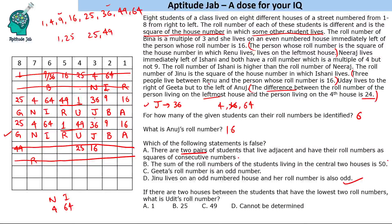If there are two houses between the students with the lowest two roll numbers — the lowest roll numbers are 1 and 4 — then we consider the scenario where there are two houses between them. In that case, Udai's roll number is 1. So the answer to that question is that Udai's roll number is 1. That concludes the solution to this arrangement and the answers to all related questions.